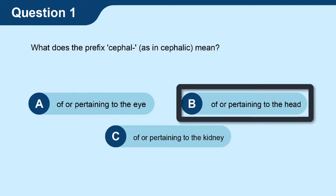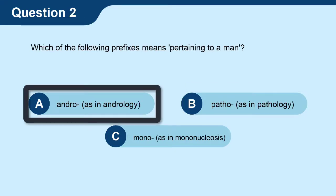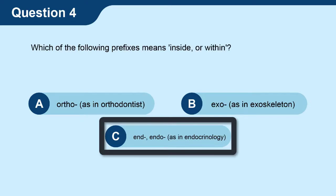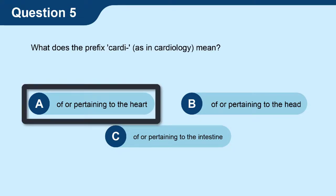Question 1: What does the prefix cephal, as in cephalic, mean? Answer: B — pertaining to the head. Question 2: Which of the following prefixes means pertaining to a man? Answer: A — andro, as in andrology. Question 3: Nephro, as in nephrology, means? Answer: C — of or pertaining to the kidney. Question 4: Which of the following prefixes means inside or within? Answer: C — end or endo, as in endocrinology.